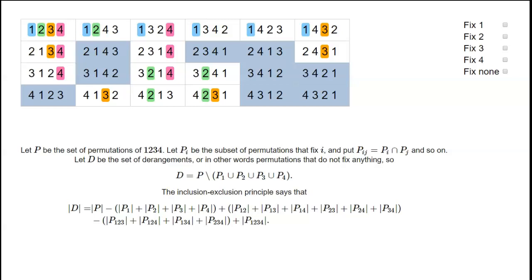Now we're going to look at the problem of counting derangements. Derangements are a kind of permutation. In this table here we've listed all the 24 permutations of 1, 2, 3, 4.